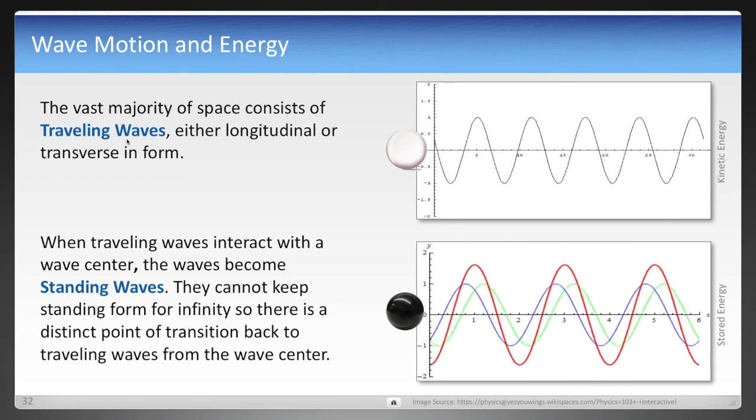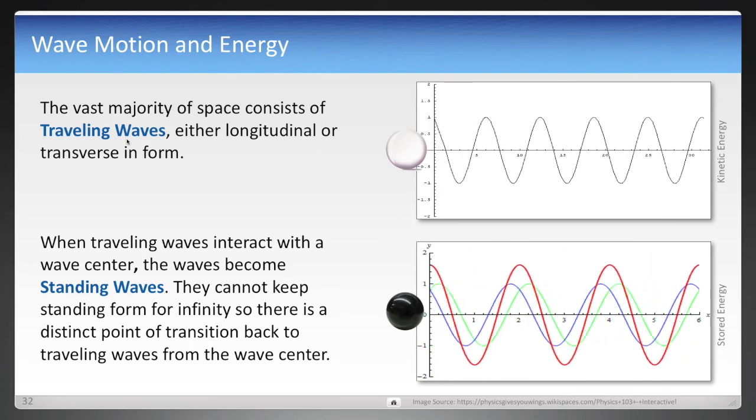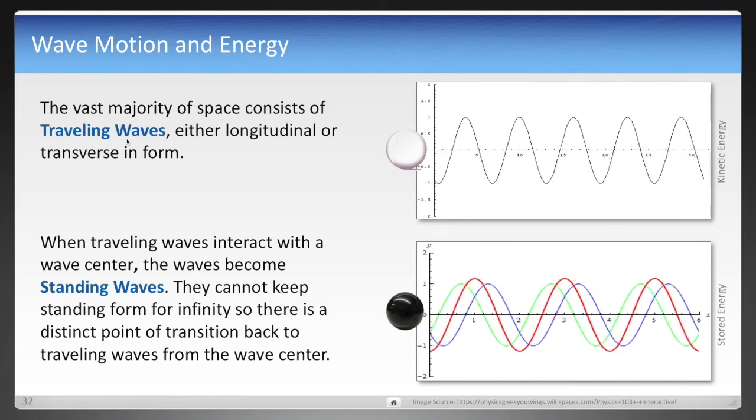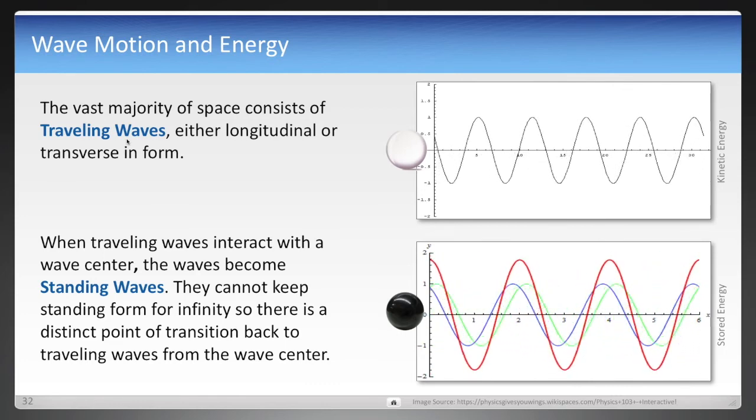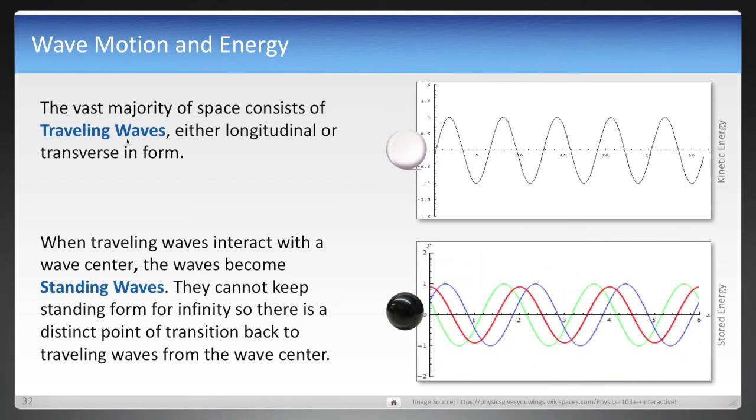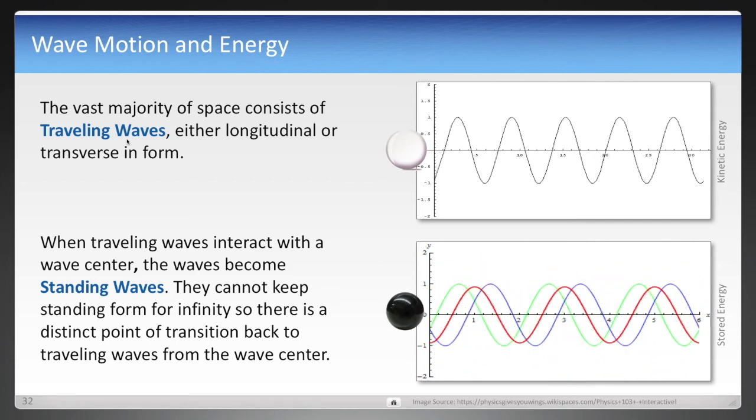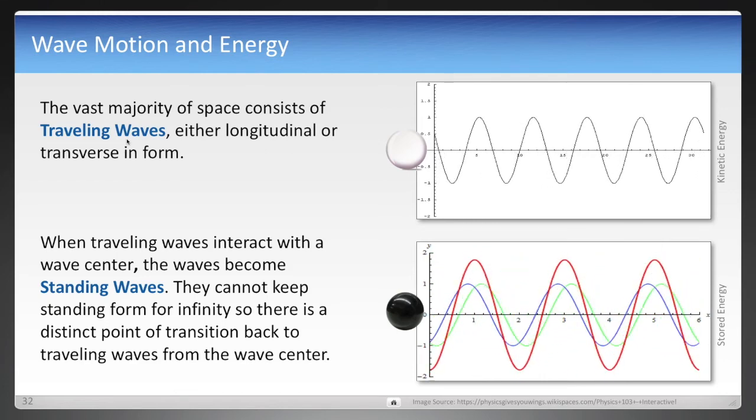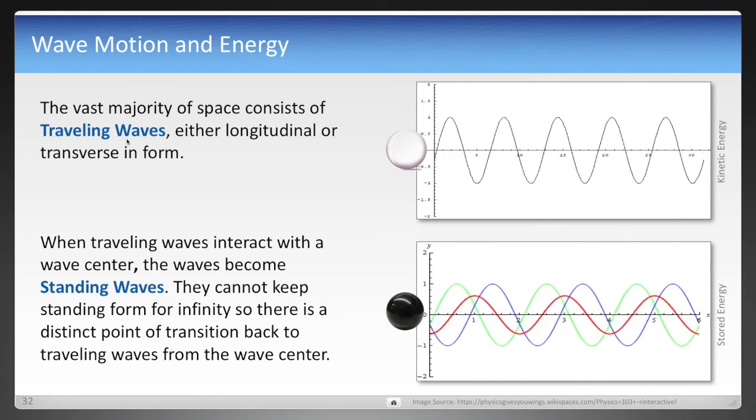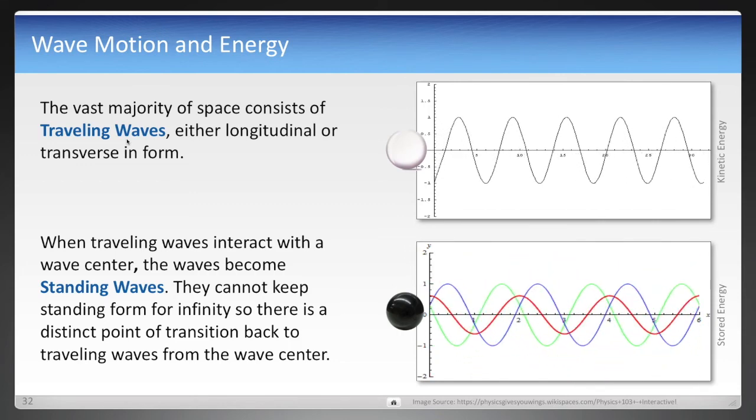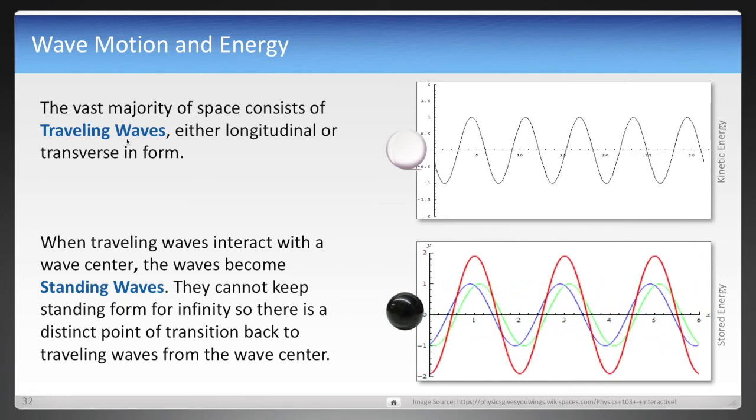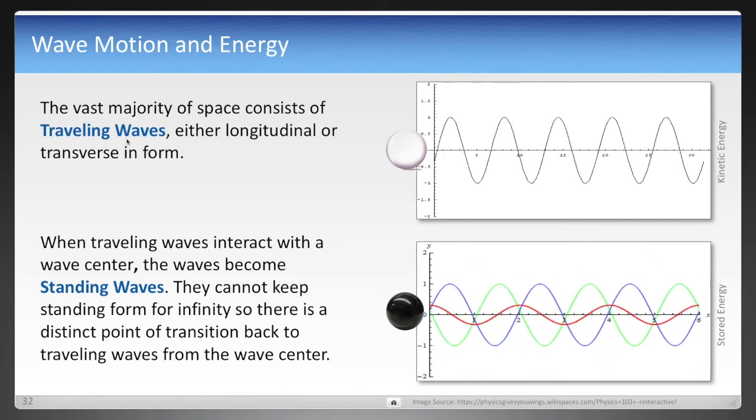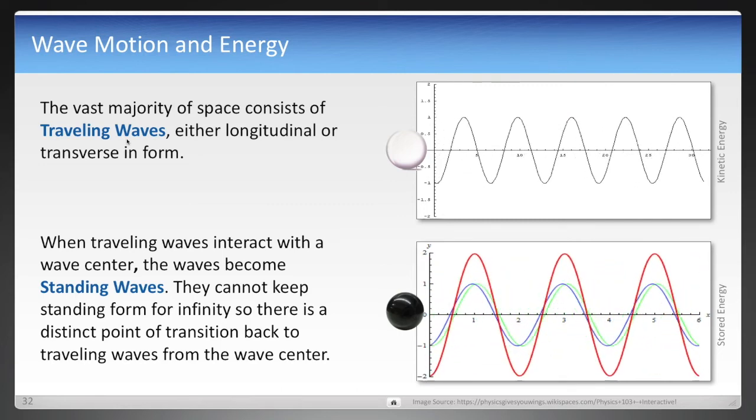And in the bottom right, you see that illustration of a blue wave going to the left, reflecting off of the wave center to become the green wave to the right. The red is the result of those two waves. Those two waves, the in-wave and out-wave, are creating a standing wave. It goes up and down, but it's stationary, always in the same place. And so that becomes stored energy or mass of a particle. But it cannot keep that standing form for infinity. So there is a distinct point where it transitions back to traveling waves. And that becomes a particle's radius.